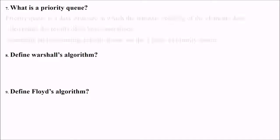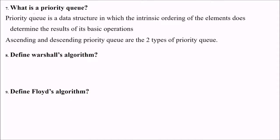What is a priority queue? Priority queue is a data structure in which the intrinsic ordering of the elements determines the result of basic operations. Ascending and descending are the two priority queues.